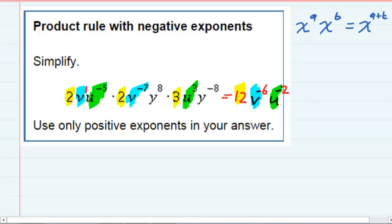And then we have one more to do, and that is the y's. y8 times y negative 8. We keep the base, add the exponents. 8 plus a negative 8 actually gives us 0.